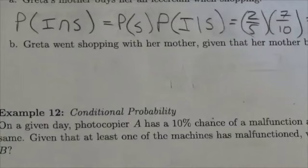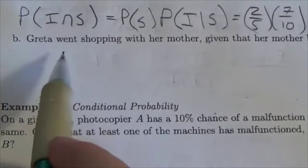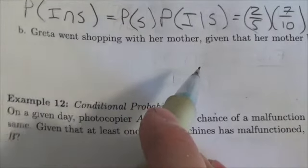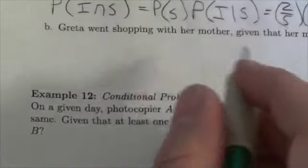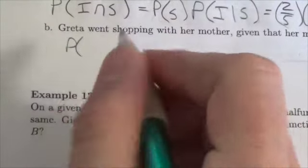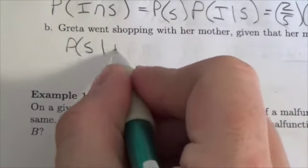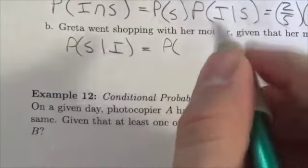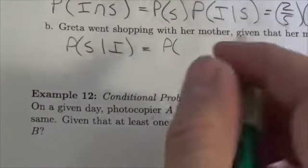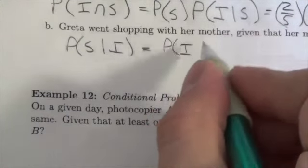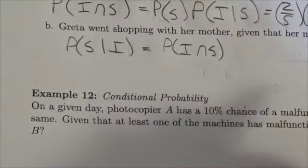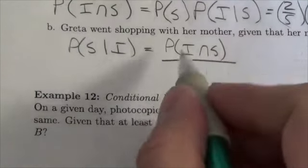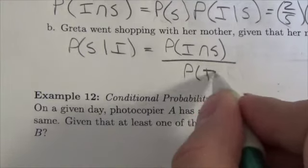Now we're going to take a look at a related but slightly different question. Greta went shopping — we're looking for the probability that Greta went shopping with her mother given that her mother buys her an ice cream cone. So we want to know what is the probability that she is shopping given that she's gotten an ice cream cone. This is going to be equal to the probability of getting an ice cream cone and shopping, divided by the probability that she's gotten an ice cream cone.